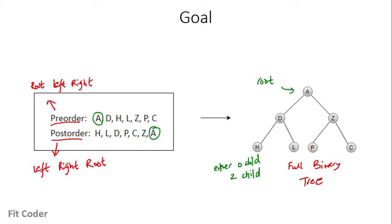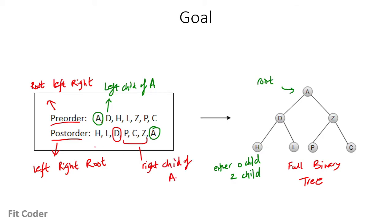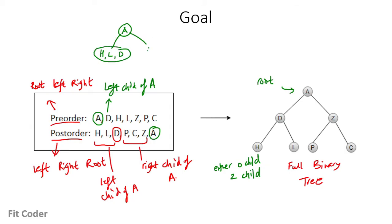Since the number of nodes is greater than 1 and the tree is a full binary tree, the node next to A in pre-order is the left child of A, which is D. If we find D in the post-order traversal, all nodes before D will be the left subtree of A, and all nodes after D will be the right subtree. So the left subtree contains H, L, and D, and the right subtree contains P, C, and Z.